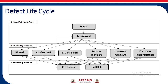Now this is the defect life cycle. Firstly, identifying the defect which has the new stage, then the assigned stage where we assign that particular defect to the developer who developed that particular functionality. After assigning, the developer starts resolving the defect, where different stages come in like fixed, deferred, duplicate, not a defect, cannot resolve, and cannot reproduce. After resolving, retesting is done to find out whether the defect has been removed or not, where the reopen and close stages come.